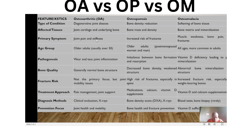The primary symptom in osteoarthritis is joint pain and stiffness, especially in the weight-bearing joints. In osteoporosis, we have increased risk of fractures — we normally call them pathological fractures. In osteomalacia, the primary symptoms are muscle weakness, bone pain, and fractures.